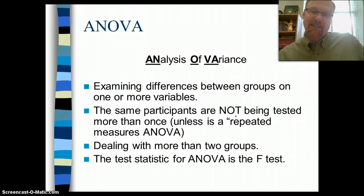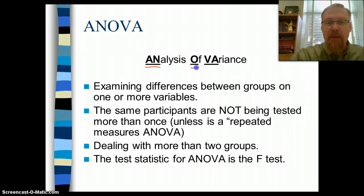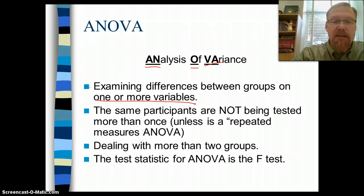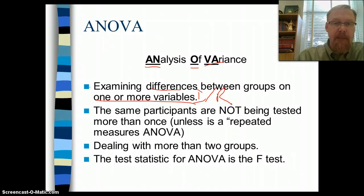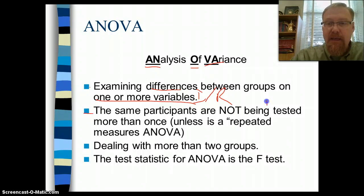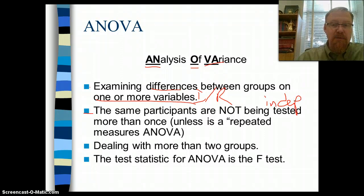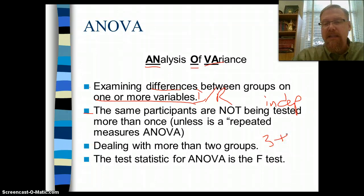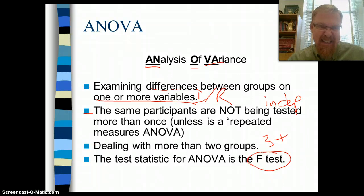So what is ANOVA? It's Analysis of Variance — you can see how we get the spelling of ANOVA from Analysis of Variance. It examines differences between groups on one or more interval or ratio variables. The same participants are not tested more than once, making it an independent sample, and we're definitely dealing with three or more groups. The test statistic for an ANOVA is the F-test — just like when we were looking at a t-test, the name of the statistic is in the name of the test. With a t-test it's a T; now we're getting an F.